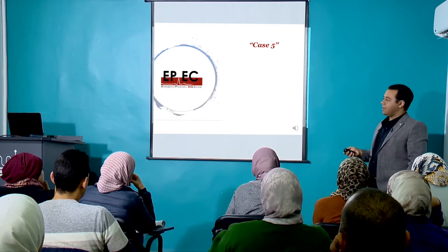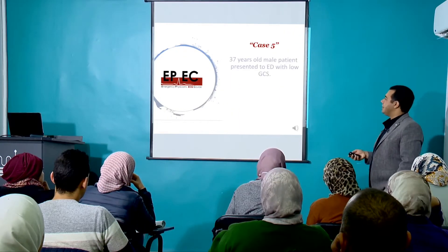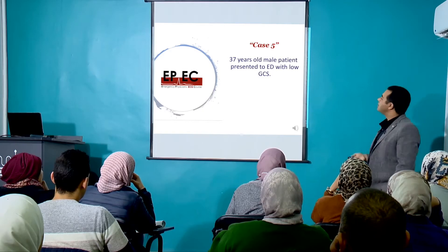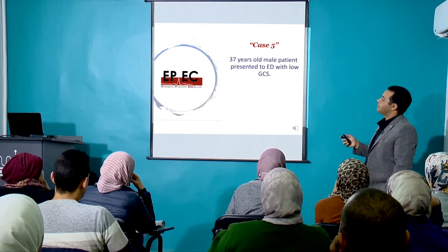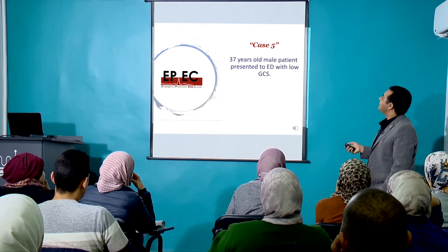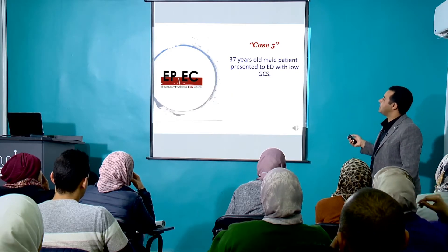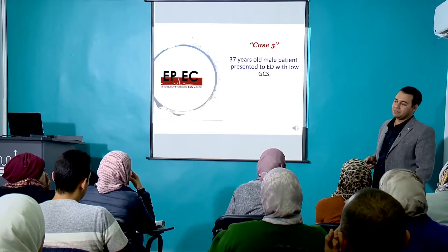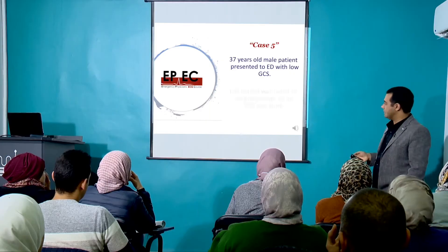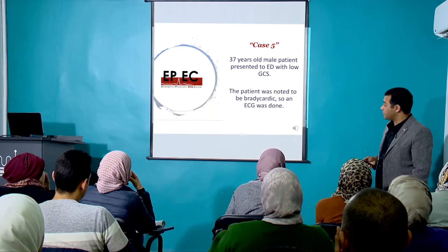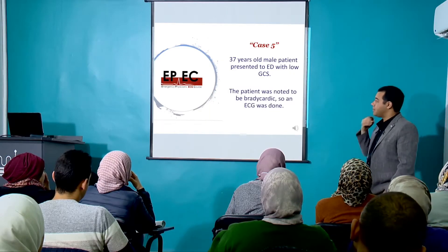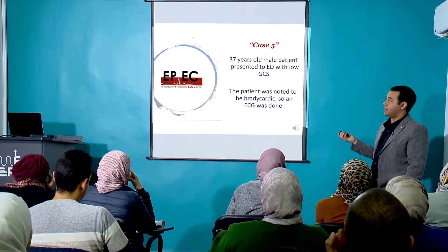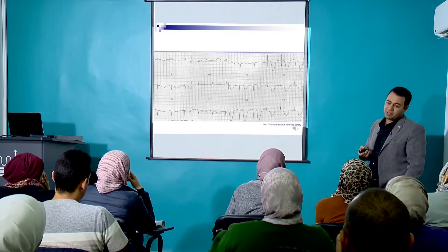Case number five. A 37-year-old male patient presented to ED with low GCS. The patient was noted to be bradycardic, so an ECG was done — and this was the ECG.